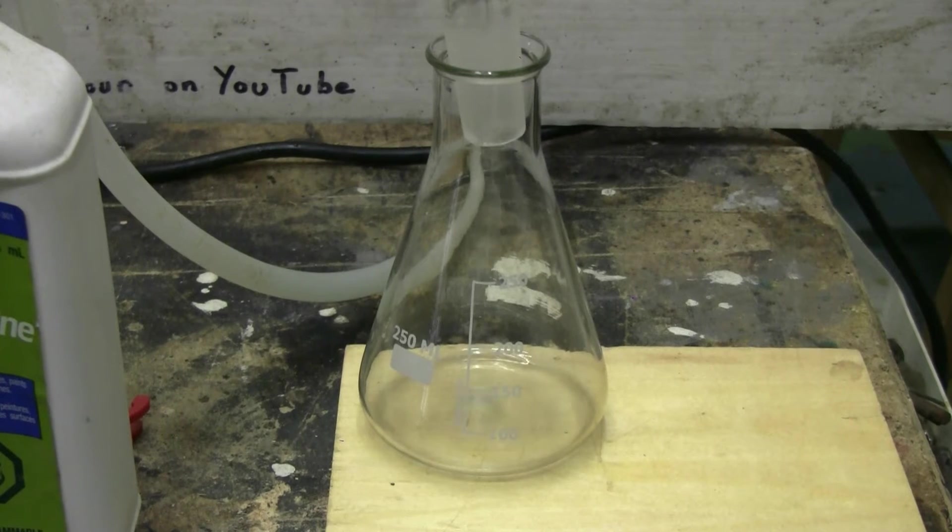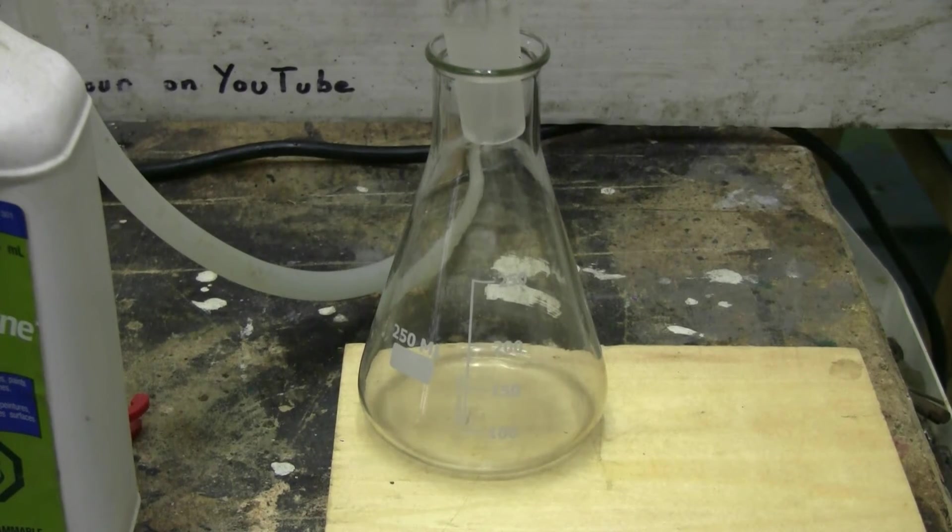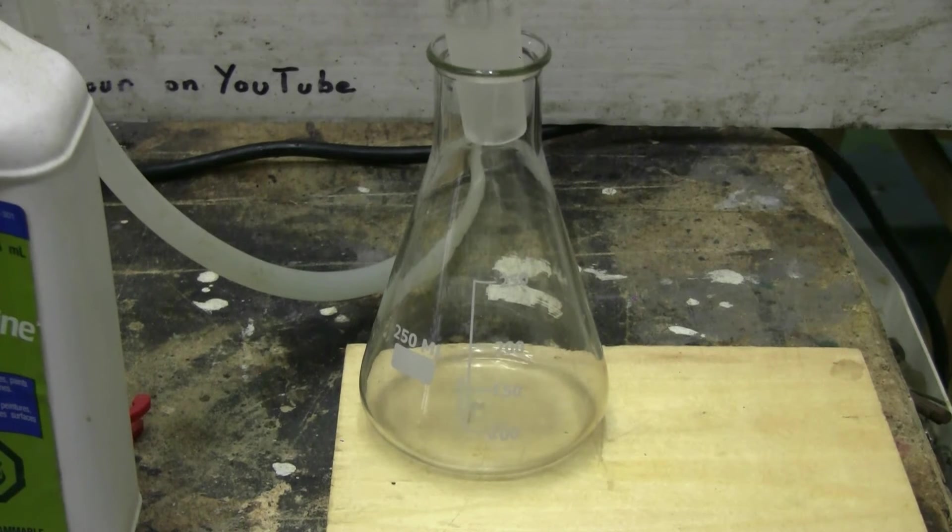Temperature is holding at around 154 to 155 Celsius and I'm getting distillate coming over, so this should be alpha-pinene that I'm collecting here in this 250 milliliter Erlenmeyer flask.